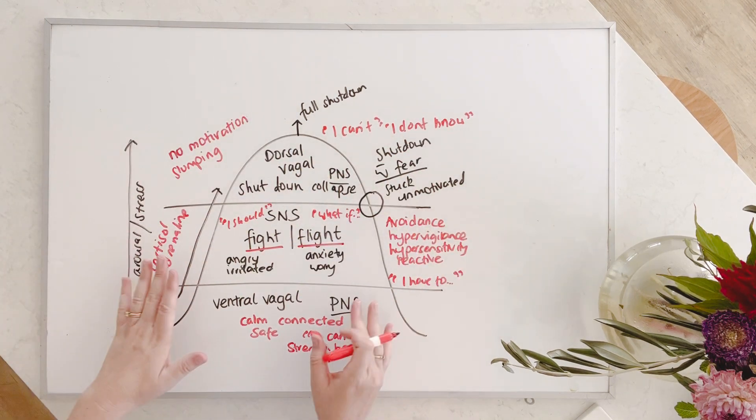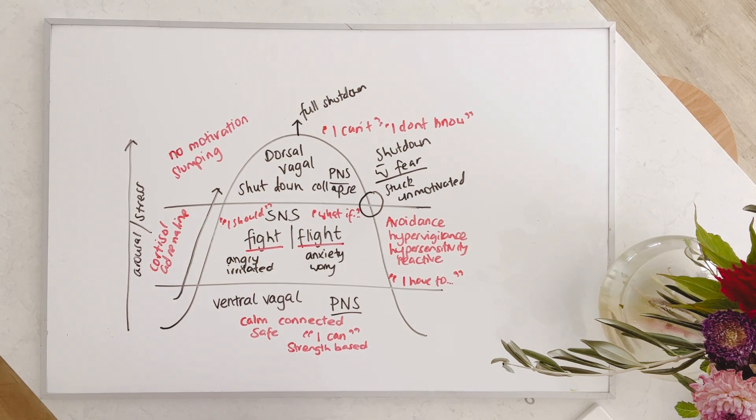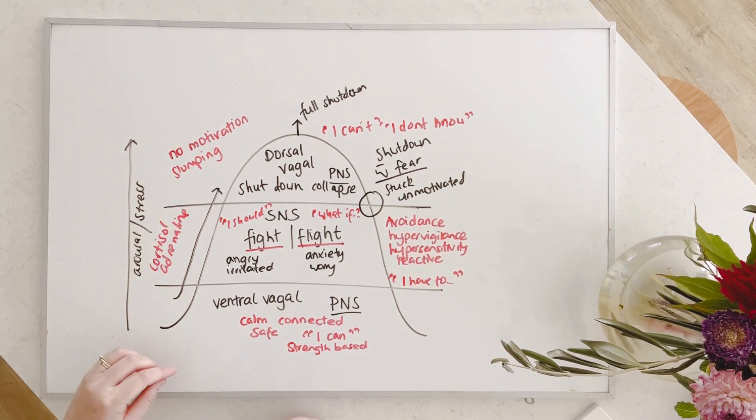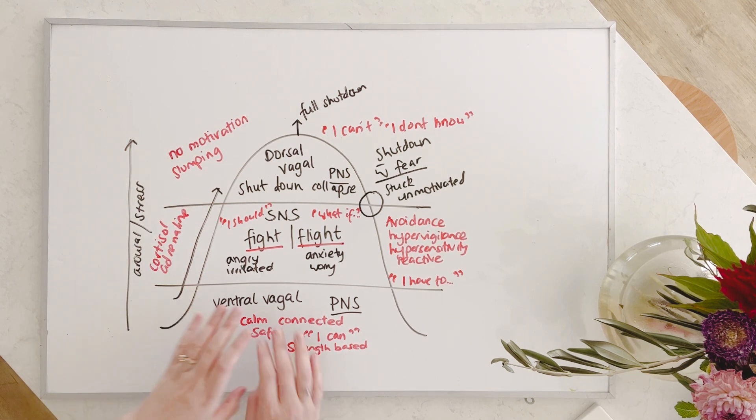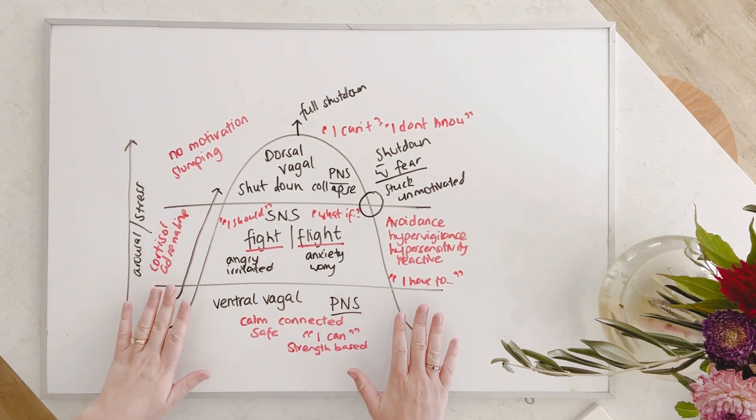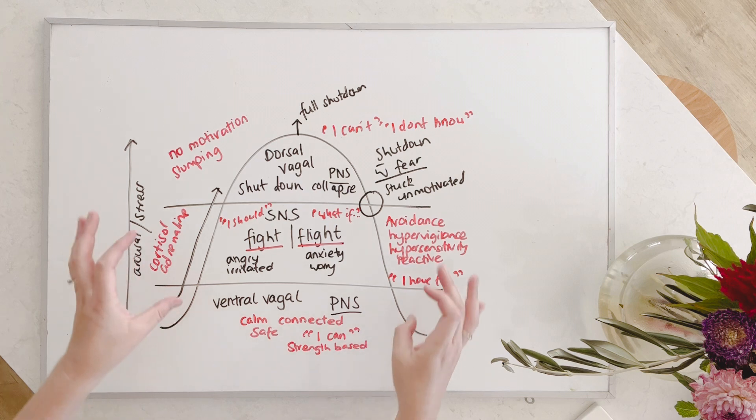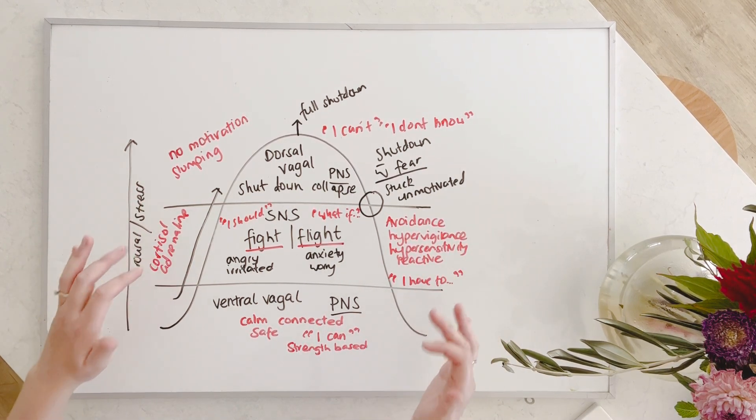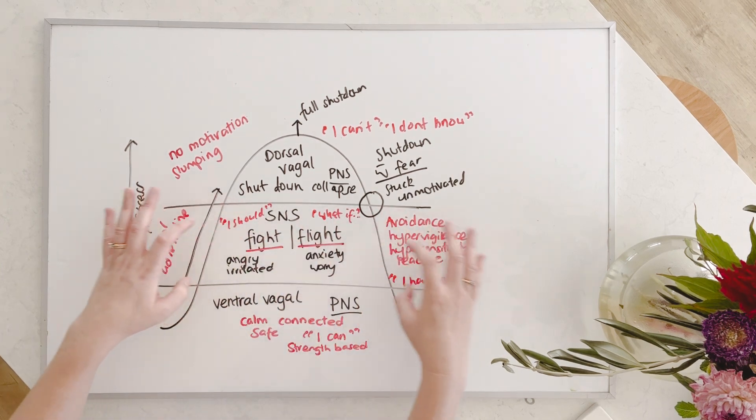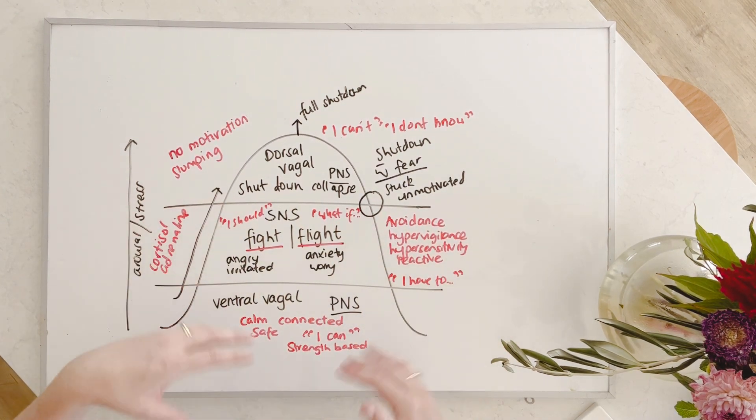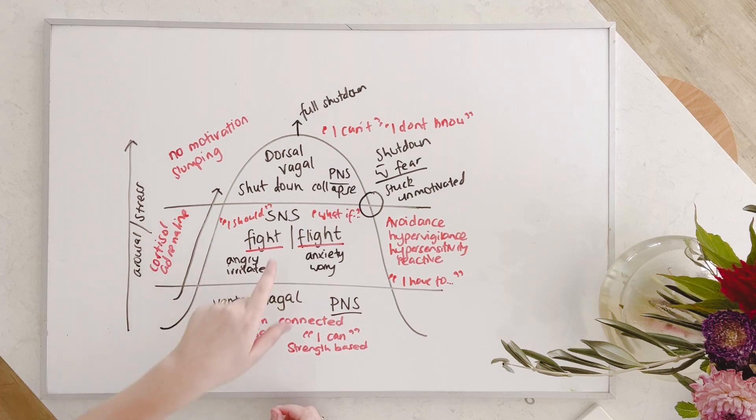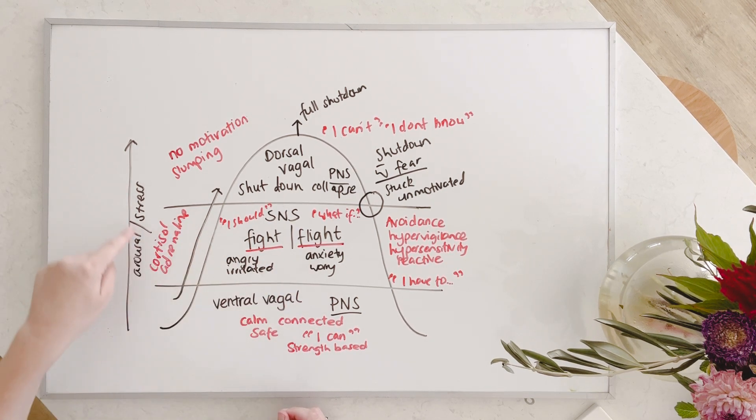So there's some things to look out for. I know this has now become a very busy drawing. But really, it gives us this idea that we can check in with our own nervous system to understand where we're at. So if I'm feeling calm and connected and safe, I know that I'm here. I can look out for these things. Avoidance, hypervigilance, hypersensitivity, reactivity. I can look out for the change in my thinking styles. I have to, I should, what if? I can look out for that kind of go, go, go overworking energy to let me know that I'm in a place of stress.